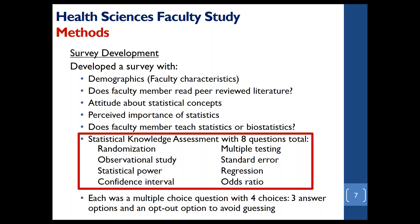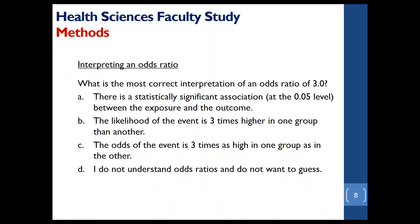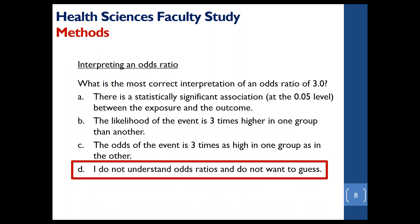Each multiple choice question had four options. The first three options were knowledge-based possible answers. The last option was an option for opting out of guessing — for example, 'I do not understand odds ratios and do not want to guess.' So if the participant wanted to opt out, they could select that; otherwise, there were three possible choices to choose from. The correct answer for the odds ratio question involves interpreting it in terms of odds. Unfortunately, a good proportion of faculty selected the wrong answer and mistakenly interpreted an odds ratio as a probability instead of in terms of odds.